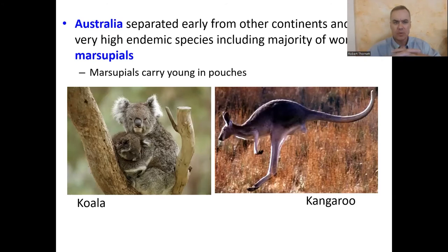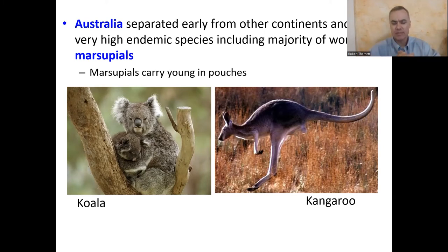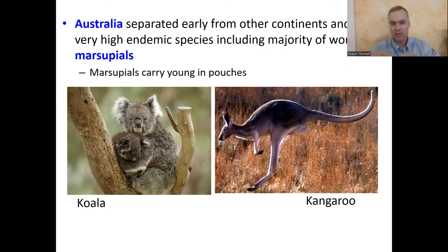Let's go to the other side of the world — the land down under — Australia, the Australian zoo region. That zoo region is extremely distinct because Australia separated very early from the other continents, similar to Madagascar, and so has a very high number of endemic species. It's especially a place where you can find marsupials — kangaroos, koalas, and wallabies are only found in Australia.